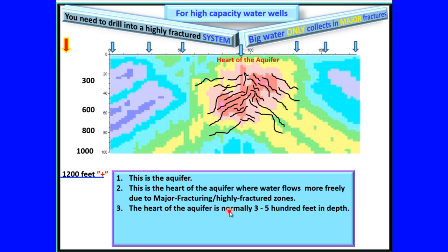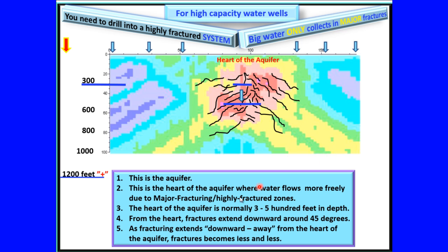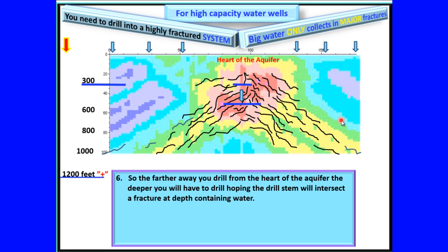The heart of the aquifer is normally three to five hundred feet in depth. From the heart, fractures extend downward 45 degrees. Fractures become less and less. So the farther away you drill from the heart of the aquifer, the deeper you would have to drill, hoping the drill stem will intersect a fracture at depth containing water.